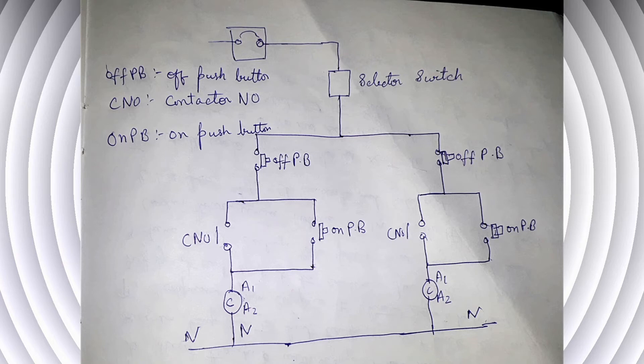To A2 of the contactor, neutral is connected — completing the wiring of pump 1. For pump 2, the wiring is similar: from the selector switch to the OFF push button, from the OFF push button one wire to the NO of the contactor and another to the ON push button. From the ON push button, one wire connects to the NO of the contactor and another wire connects to A1 of the contactor, with neutral connected to A2. This is how the control wiring is done.